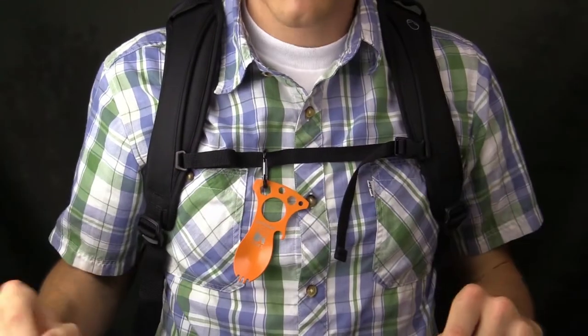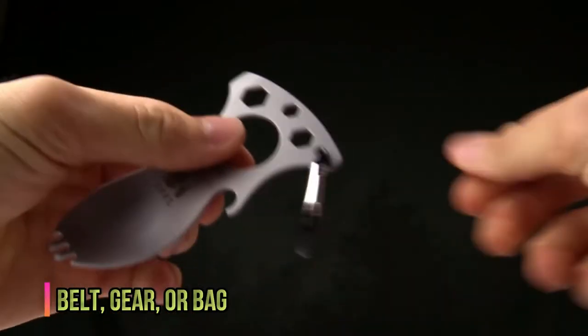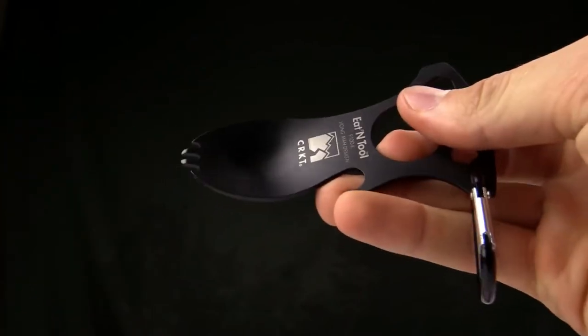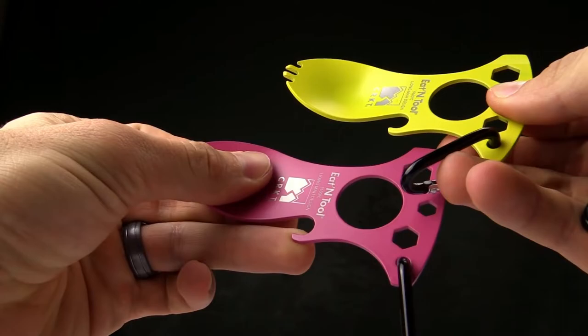A handy carabiner is included for quick and easy attachment to your belt, gear, or bag. The stainless steel it is made of ensures that this tool will hold up to demanding tasks. Best for camping, hunting, backpacking, and more.